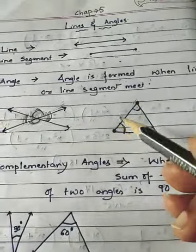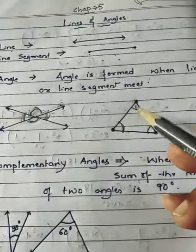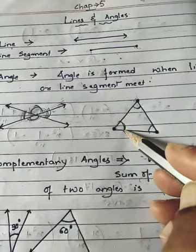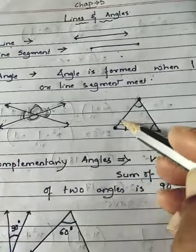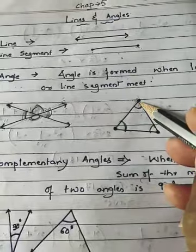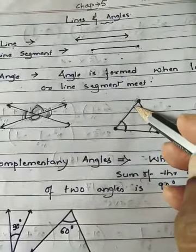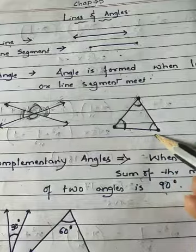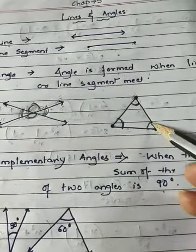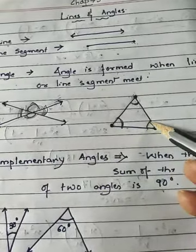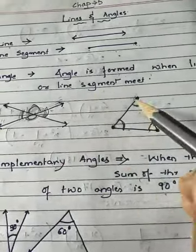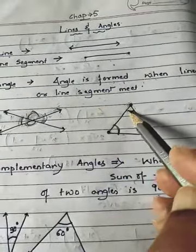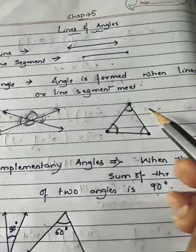Also, when line segments meet at one point, they form an angle. This line segment and this line segment are meeting here, so they form one angle. Similarly, this line segment and this line segment are meeting at another point forming one angle, and this pair meeting at yet another point also forms an angle. So an angle has two arms.